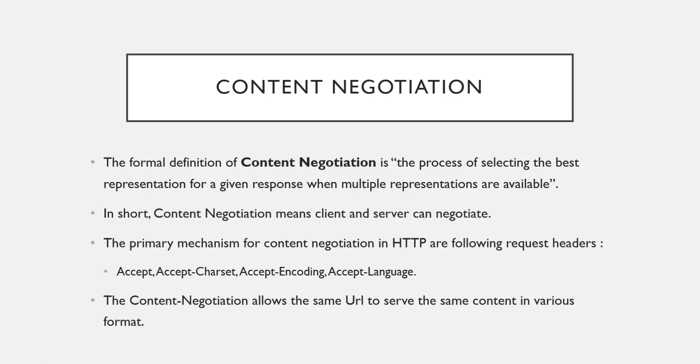With the help of content negotiation, the same URL can be used to serve multiple clients in multiple formats. For example, using the same request URL — if you need data in JSON format, the server will provide it in JSON. If you need data in XML format, you request that and the same URL will serve the data in XML format. So this is content negotiation. Let us now understand it practically — my application is already running.